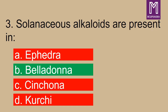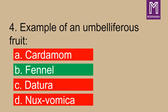Solanaceous alkaloids are present in? Correct answer: option B, belladonna. Next, example of an umbelliferous fruit? Correct answer: option B, fennel.